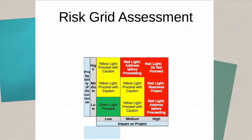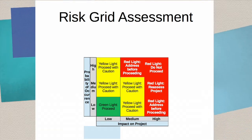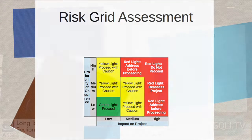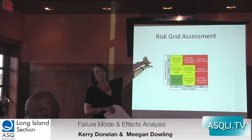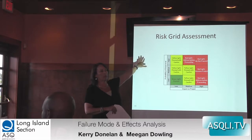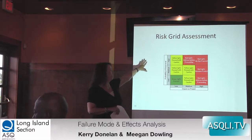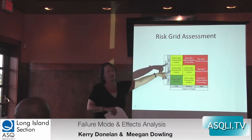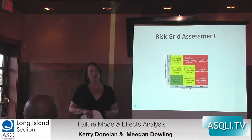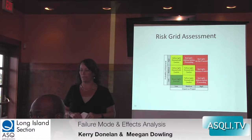Here's the grid. The impact on the project: low, medium, high. The probability that the risk will happen: the same low, medium, high scale. And it shows what you should do for each combination of steps.